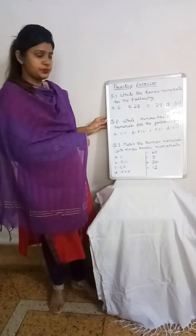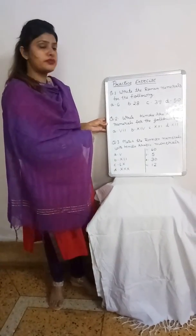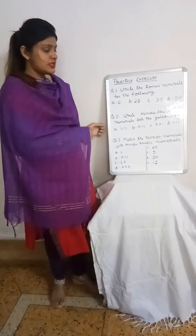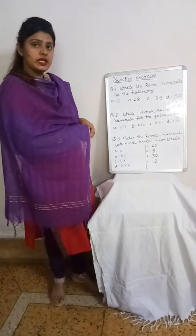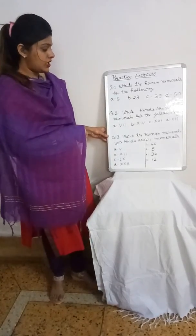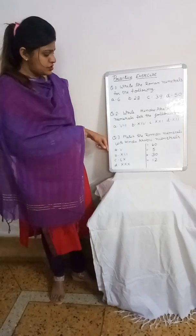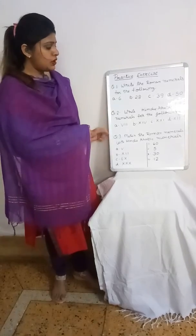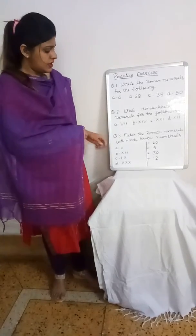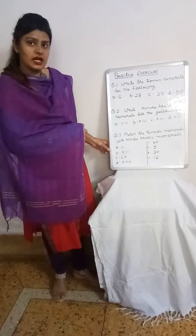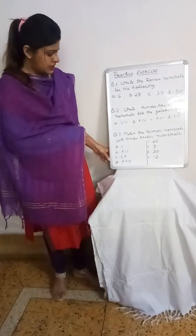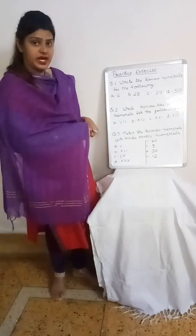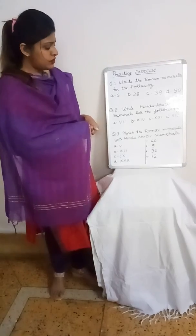Question 2: Write the Hindu-Arabic numerals for the following. Question 3: Match the Roman numerals with the Hindu-Arabic numerals. (A) V, (B) XII, (C) LX, (D) XXX — match with: (1) 60, (2) 5, (3) 30, (4) 12.